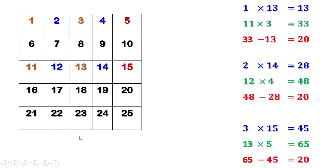Now let us explain this using algebra. Let me take the first number as x. When the first number is 1, the second number is 3. When the first number is 2, the second number is 4. When the first number is 3, the second number is 5. That means the second number is 2 more than the first number. Therefore, if x is the first number, the second number is x plus 2.